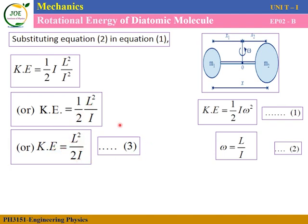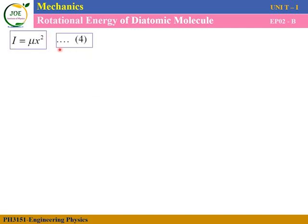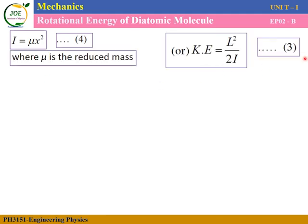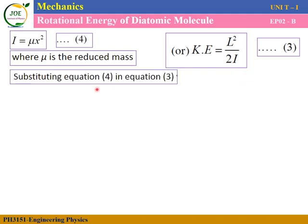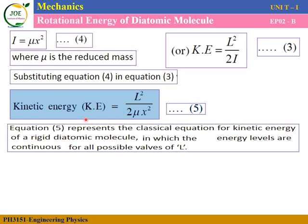From the previous calculation, the moment of inertia of the diatomic molecule is I equals mu times x squared — equation number four. Substituting equation four into equation three, kinetic energy equals L squared divided by 2 times mu times x squared. This is equation number five, the classical mechanics expression for rotating diatomic molecule kinetic energy.